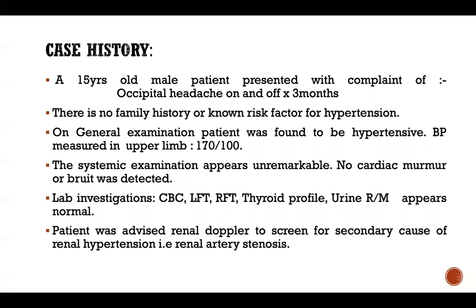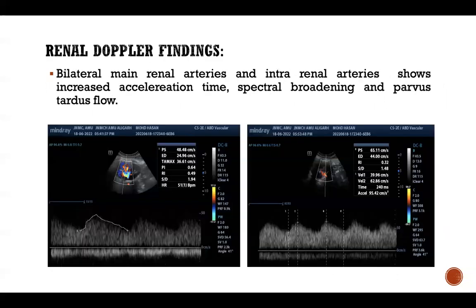Now the case history. A 15-year-old male patient presented with complaint of occipital headache on and off for three months. There is no family history of known risk factors for hypertension. On general examination, the patient was found to be hypertensive with blood pressure measured in the upper limb of 170/100. The systemic examination appeared unremarkable; no cardiac murmur or bruit was detected. Lab investigations were within normal limits and the patient was advised renal Doppler to screen for a secondary cause of renal hypertension, that is, renal artery stenosis.